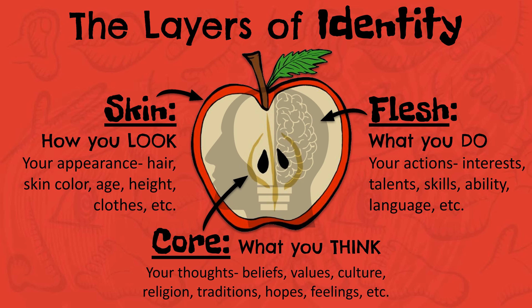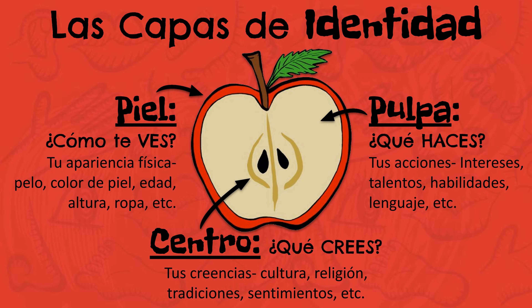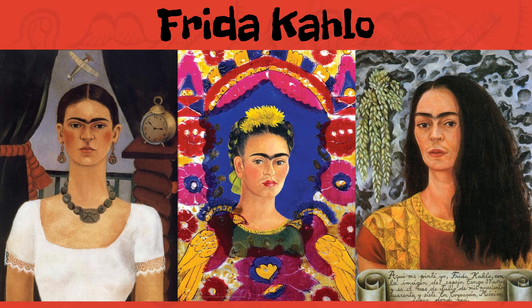The next layer is the flesh or la pulpa. This layer represents the things that you like to do and your actions. This can include your interests, talents, skills, ability, language, and more. Others can begin to uncover this layer through casual conversations and interactions with you. This is often how acquaintances, classmates, teammates, or teachers might know you.